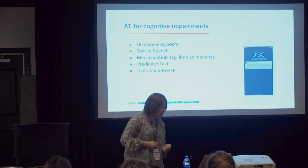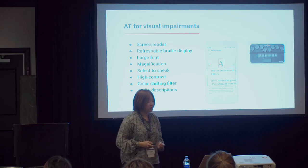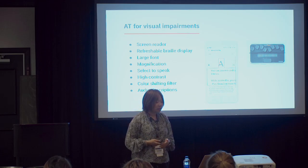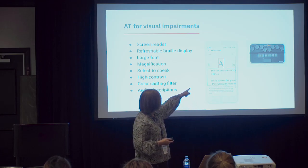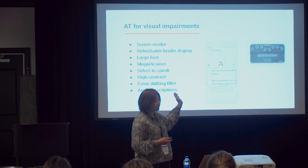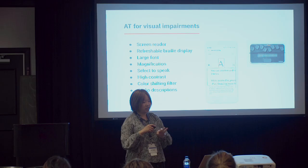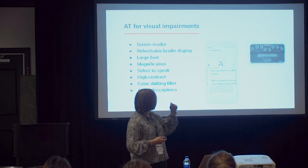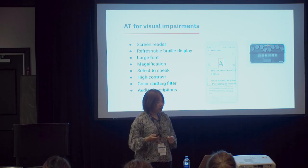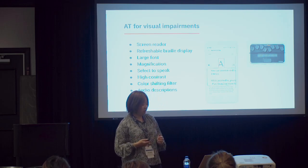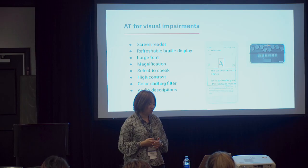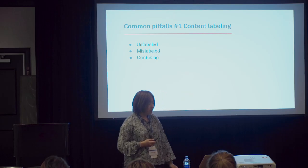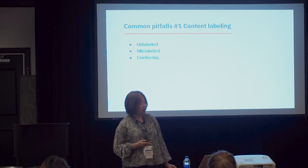For visual impairment, the assistive technology includes screen readers, refreshable braille displays — which erase automatically as the user reads — large fonts, zoom features on Android, text-to-speech, and high contrast modes. We also want to make sure everything works correctly for colorblind users.